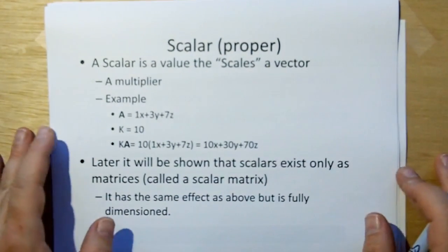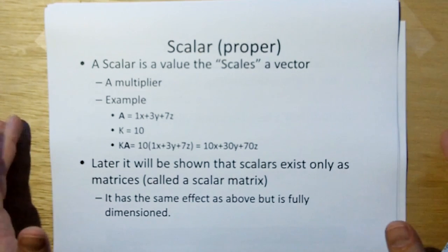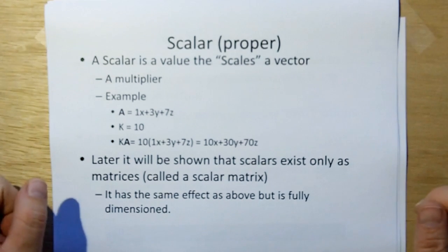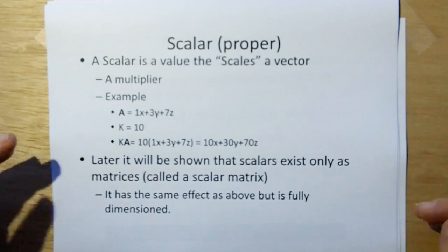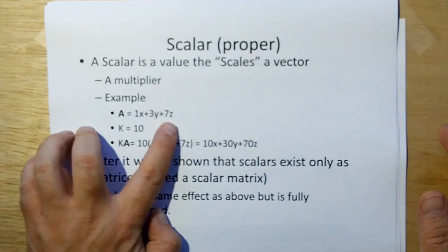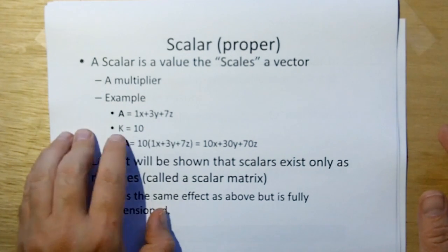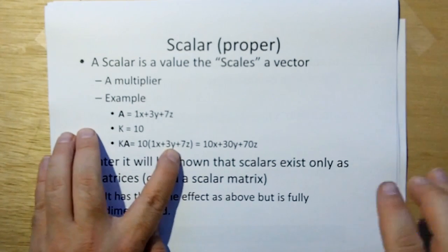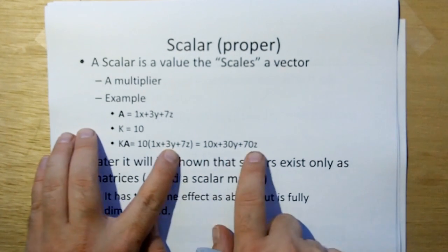Scalar, this is the proper definition of scalar. I like the mathematician's definition of scalar. A scalar is a value that scales a vector. For example, it's like a multiplier. For example, given the vector 1x plus 3y plus 7z, you have a scale factor of 10, well then k times A is 10 times that, which is 10x plus 30y plus 70z.